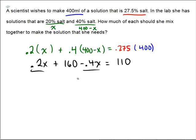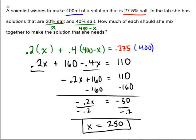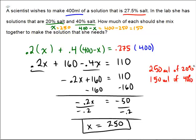Collecting like terms: negative 0.2x plus 160 equals 110. Subtract 160 from both sides to get negative 0.2x equals negative 50. Divide by negative 0.2, and that gives x equals 250 milliliters. So back to the problem: x is 250, and 400 minus 250 is 150. The final answer is 250 milliliters of the 20% solution and 150 milliliters of the 40% solution.